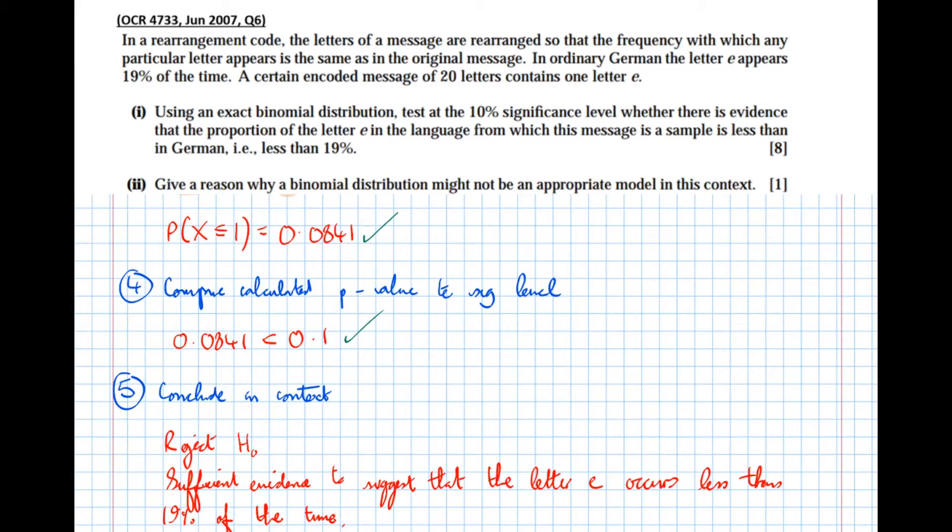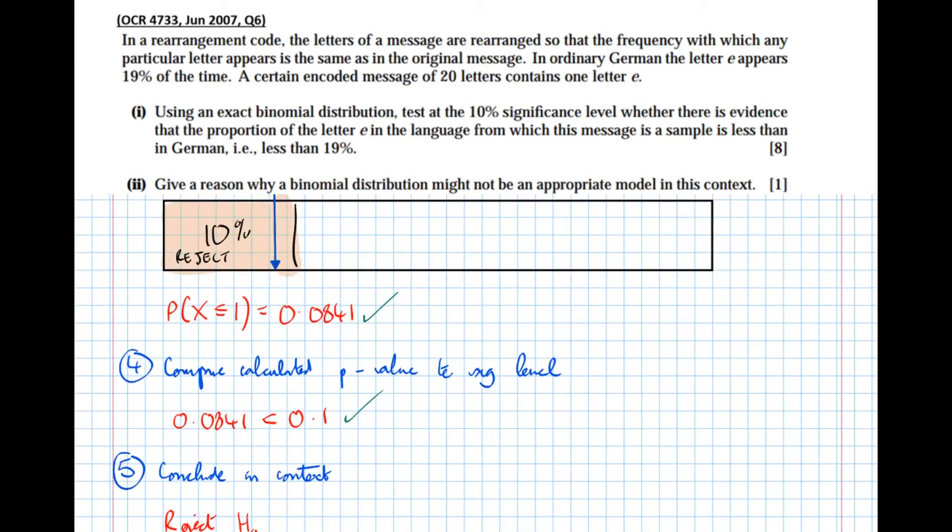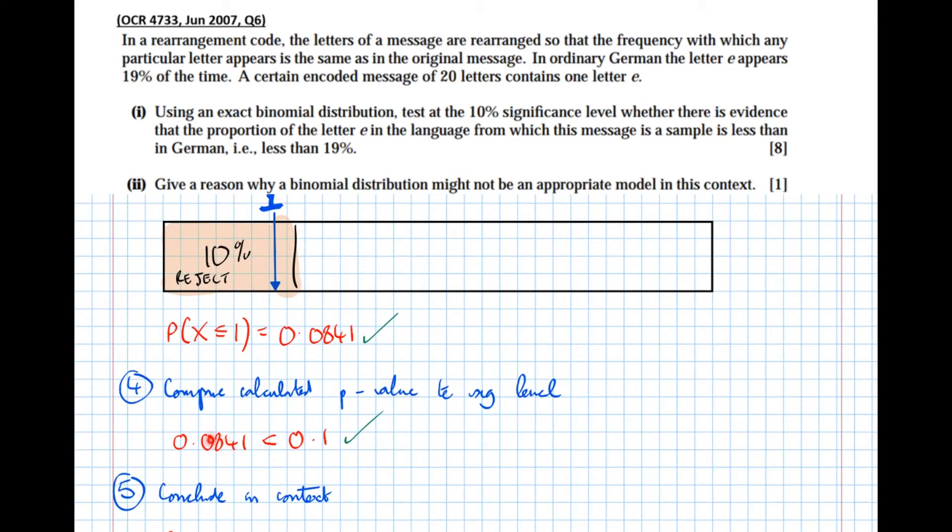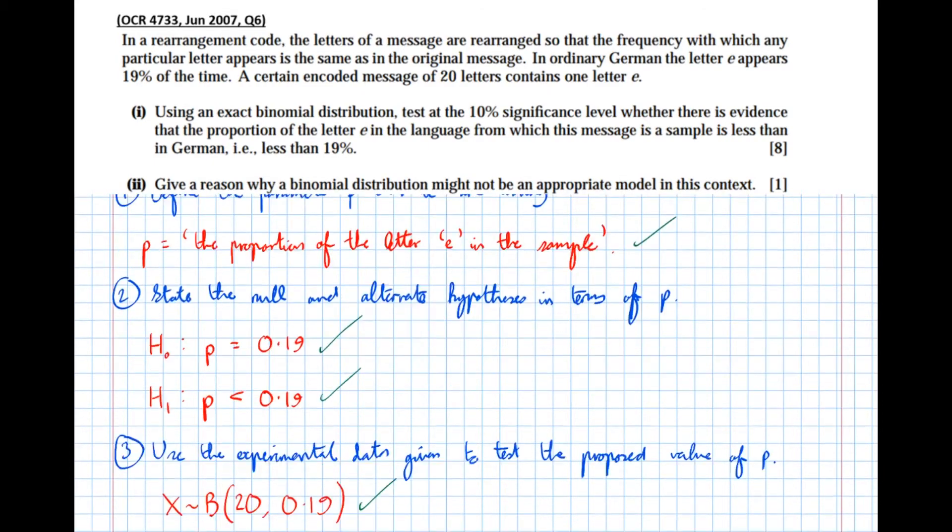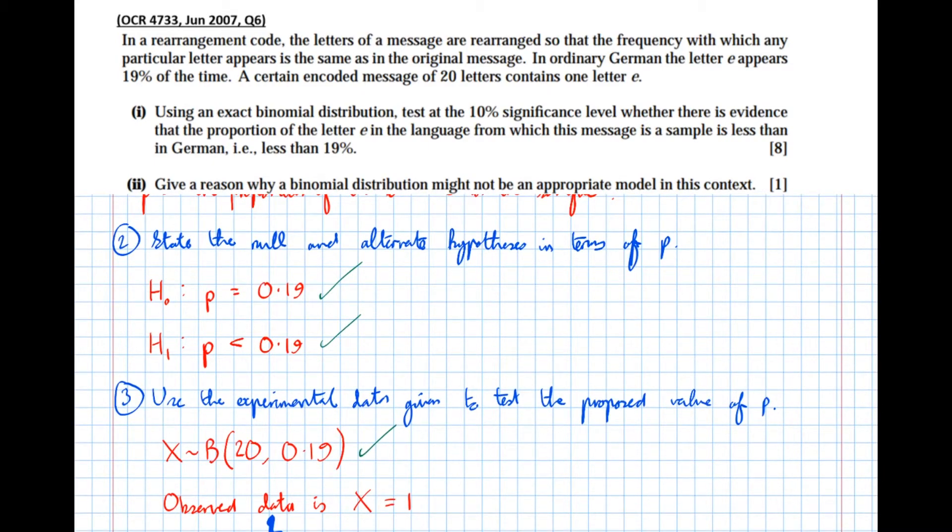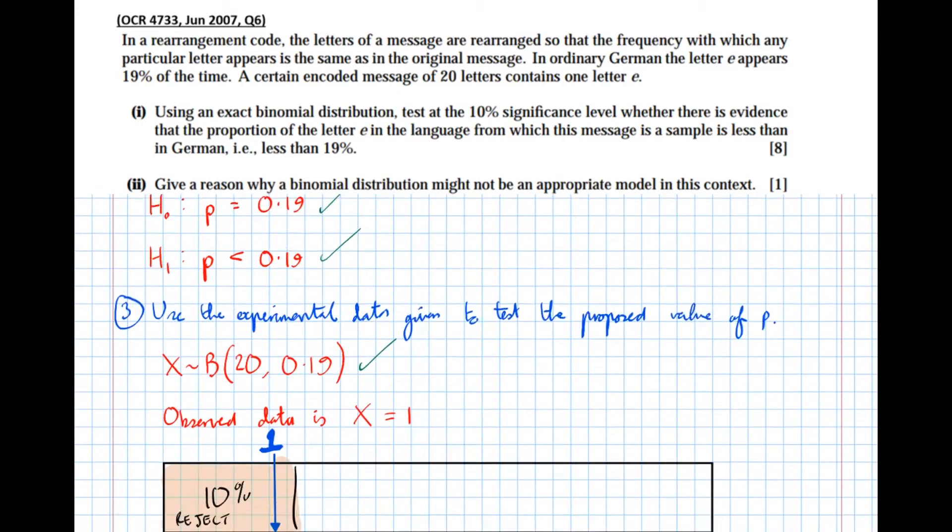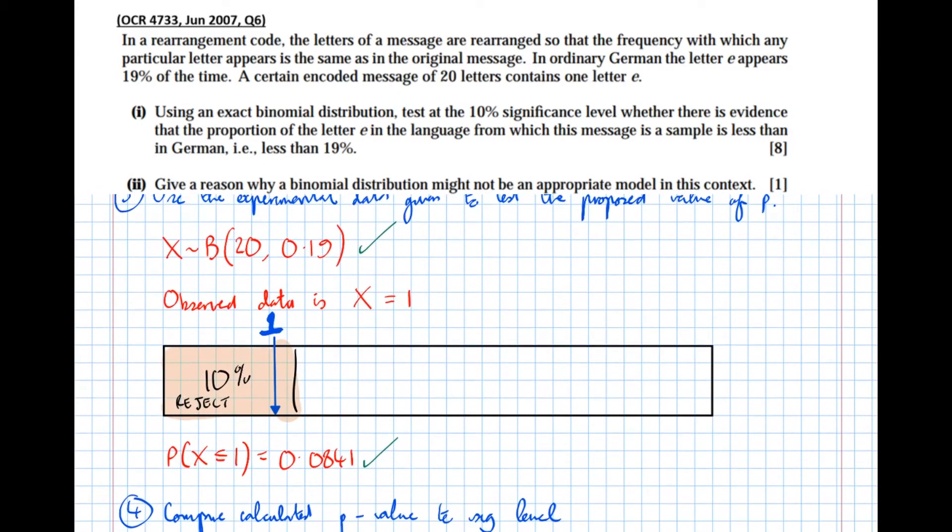So let's dissect what we've done here. The most important step to understand is this step here. Because basically we've got our significance level which is our threshold, our level of acceptability to decide whether or not something was so unlikely that we need to reject the assumptions that we initially made. So the assumption we initially made was that p is 0.19, so under this model here.